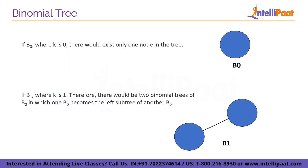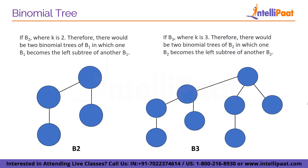If k is equal to 0, it means B0, so there is only one node in the tree. For B1, where k equals 1, there would be two binomial trees of B0, in which one B0 becomes the left subtree of another B0. For B2, where k equals 2, there would be two binomial trees of B1 in which one B1 becomes the left subtree of another B1. Similarly, for B3, where k equals 3, there would be two binomial trees of B2 in which one B2 becomes the left subtree of another B2. I hope you guys are clear with this.